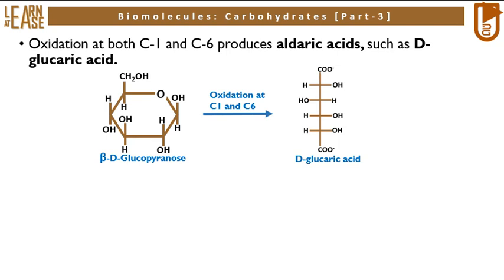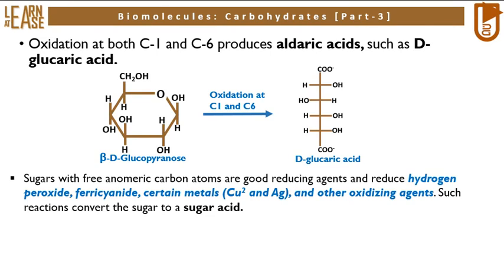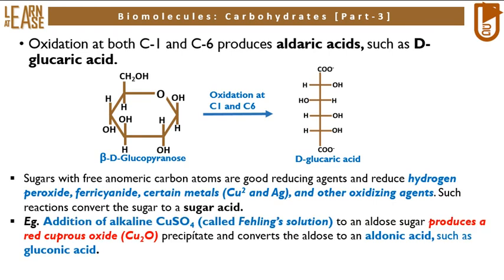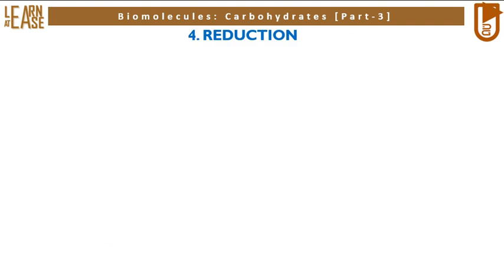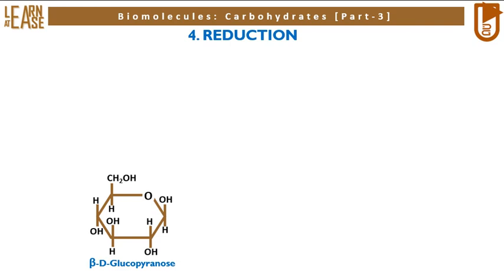Sugars with free anomeric carbon atoms are good reducing agents and reduce hydrogen peroxide, ferrocyanide, certain metals such as copper and silver, and other oxidizing agents. Such reactions convert the sugar to a sugar acid. For example, addition of alkaline copper sulfate — called Fehling's solution — to an aldose sugar produces a red cuprous oxide precipitate and converts the aldose to an aldonic acid such as gluconic acid. Carbohydrates that reduce oxidizing agents in this way are referred to as reducing sugars.